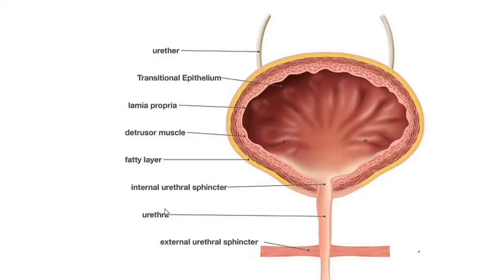The urinary bladder has a body and a neck, and the internal urethral sphincter through which urine passes and goes to the urethra, then to the external urethral sphincter which has voluntary control. The urinary bladder is made up of a particular muscle called the detrusor muscle.